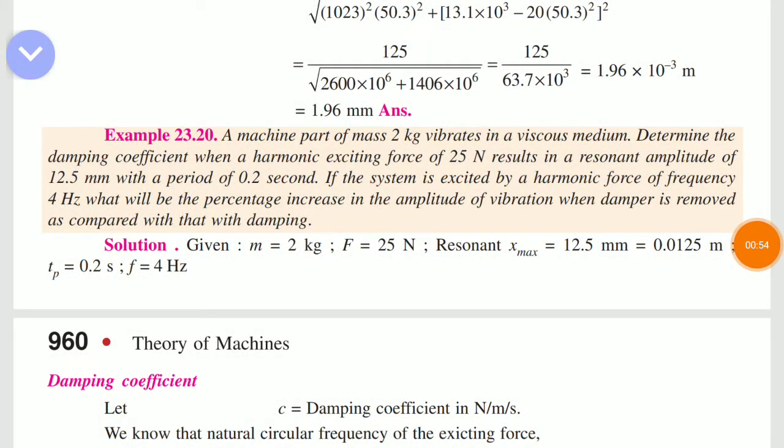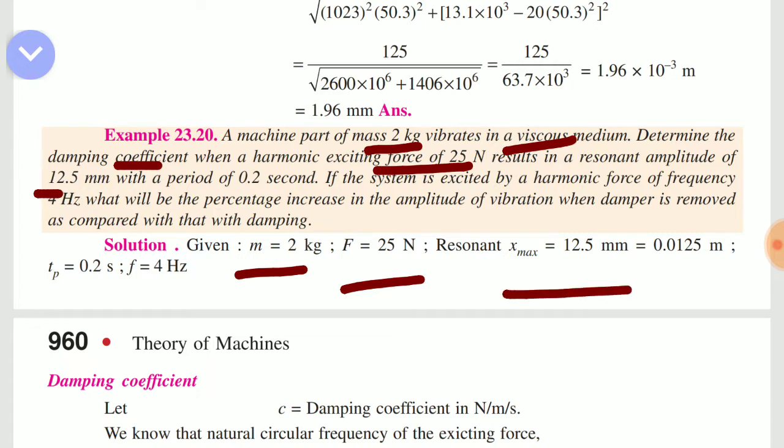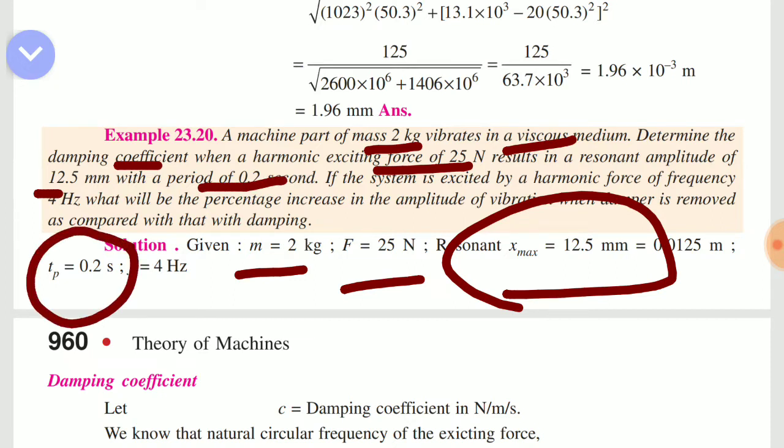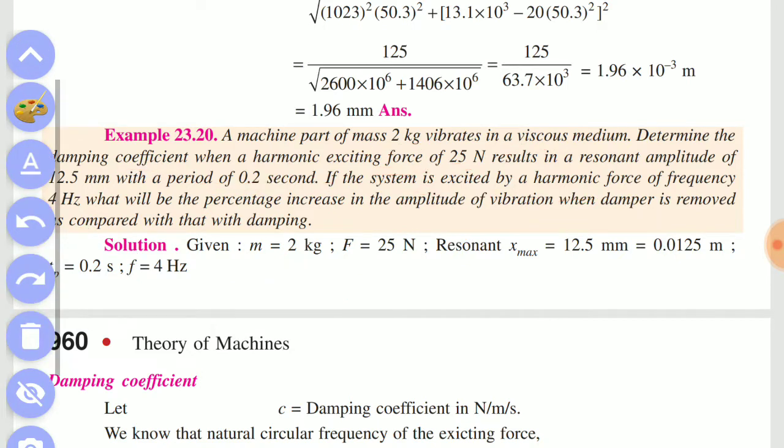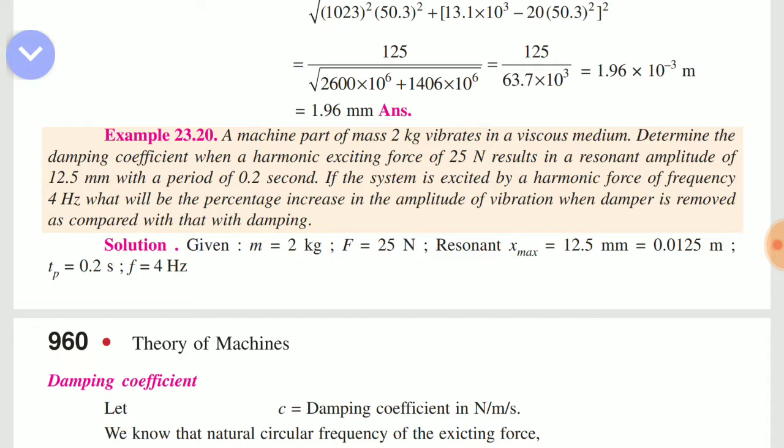Now let's take a look at this problem. This machine part of mass 2 kg vibrates in a viscous medium, so damped vibration is here. Determine the damping coefficient when a harmonic exciting force F equals 25 Newtons produces a resonant amplitude of 12.5 mm. The resonant amplitude x_max is 12.5 mm with a period of 0.2 seconds. If the system is excited by a harmonic force of frequency 4 Hz...